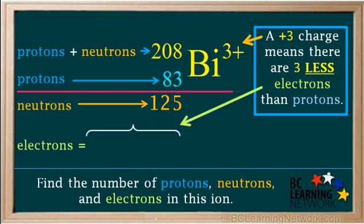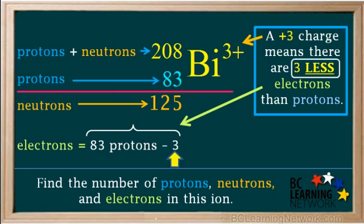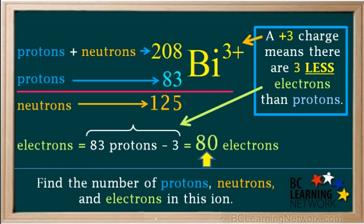So to find the number of electrons, we take 83 protons and subtract 3, which gives us 80 electrons. 80 negative electrons and 83 positive protons add up to a net charge of plus 3, which is the charge on the ion.